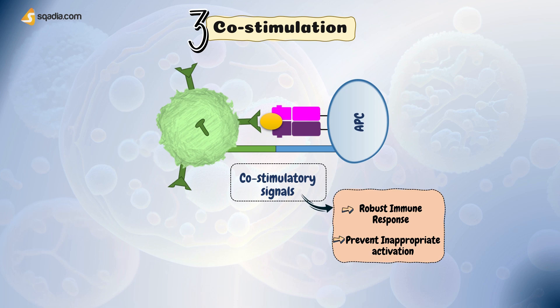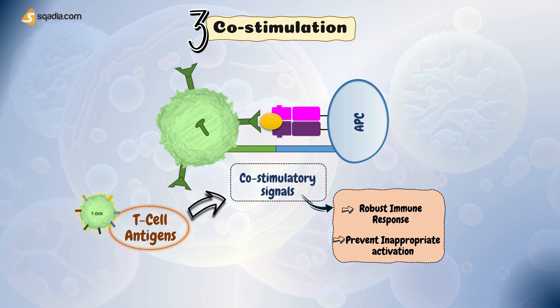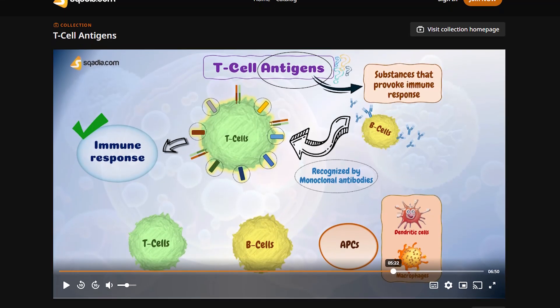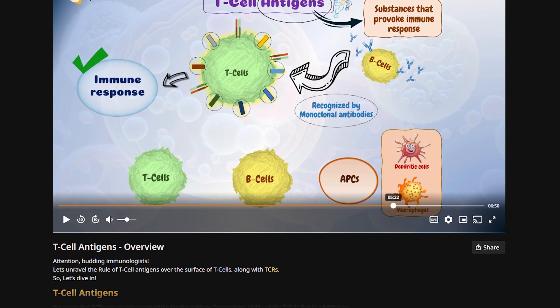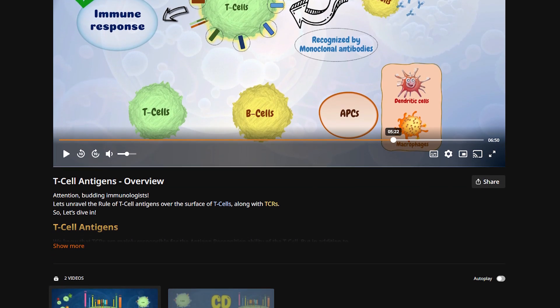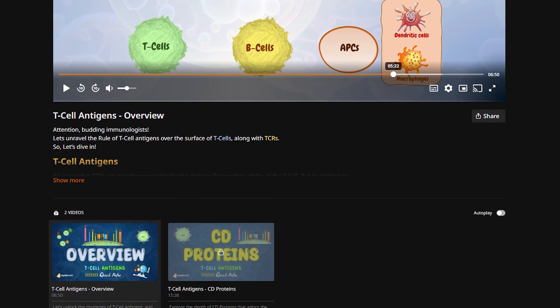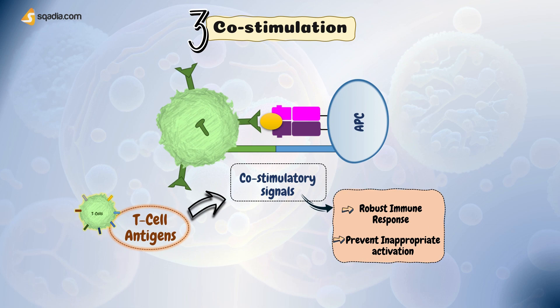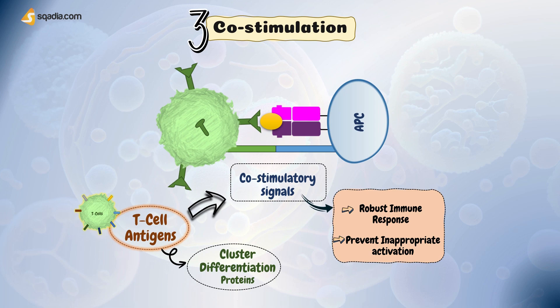The molecules that help in this co-stimulation are called T-cell antigens. You can get details about them in another video titled 'T-cell antigens,' where we explain in depth these additional surface molecules of T-lymphocytes. These T-cell antigens are actually the CD, or cluster differentiation, proteins known for their actions as co-receptors for TCRs.